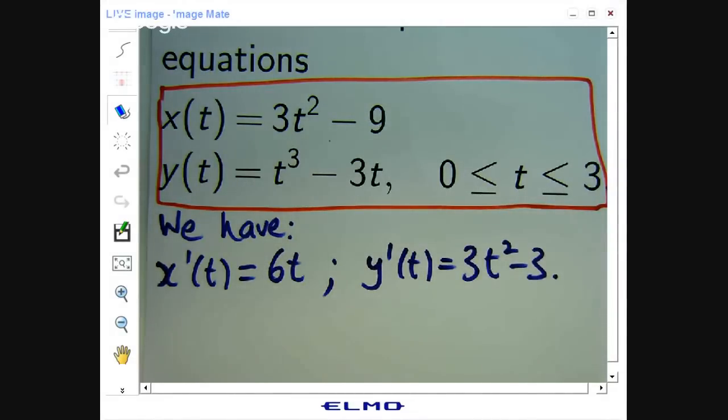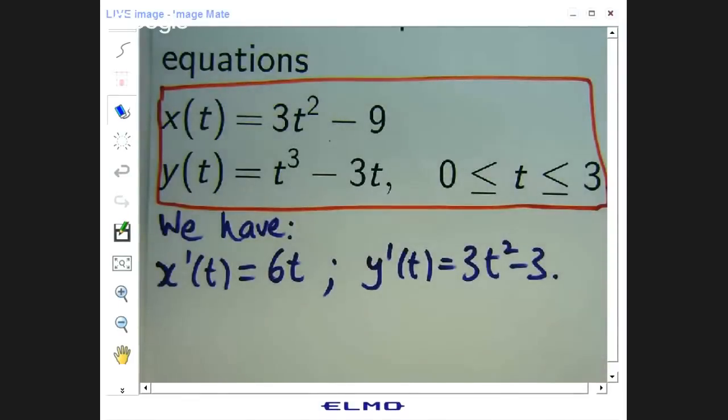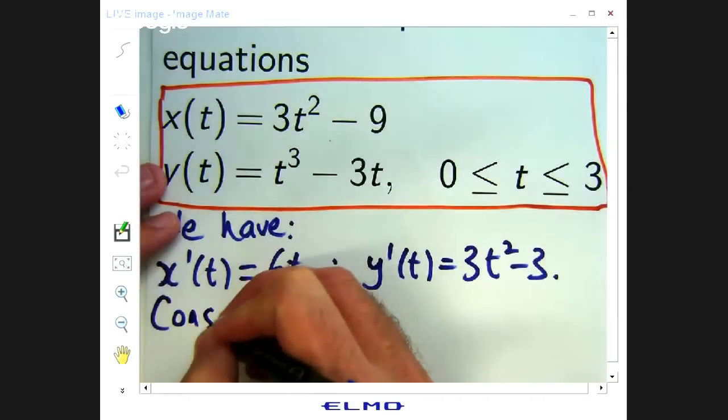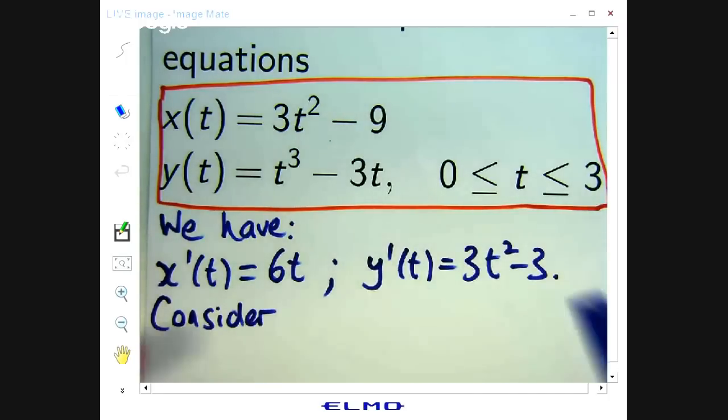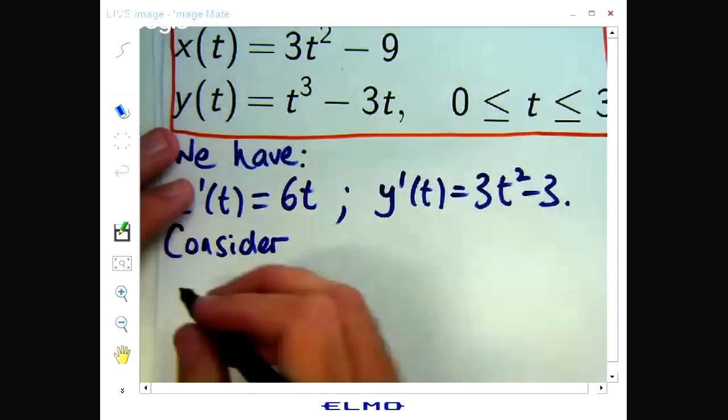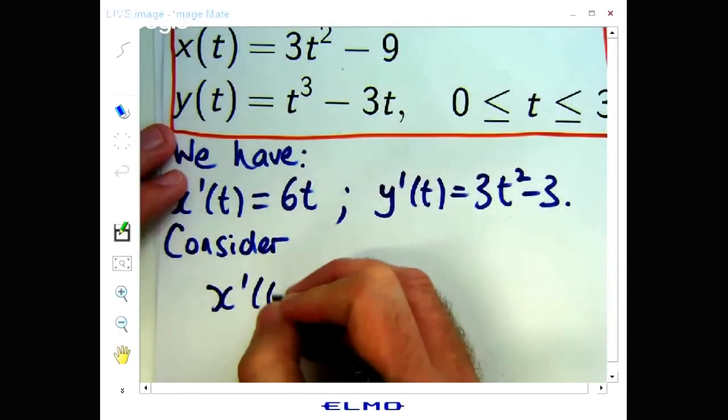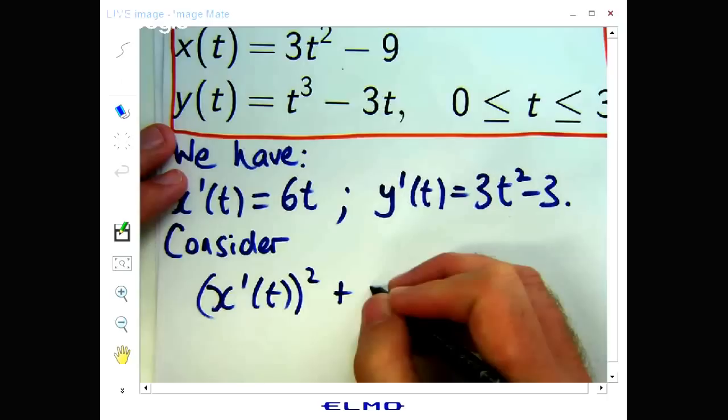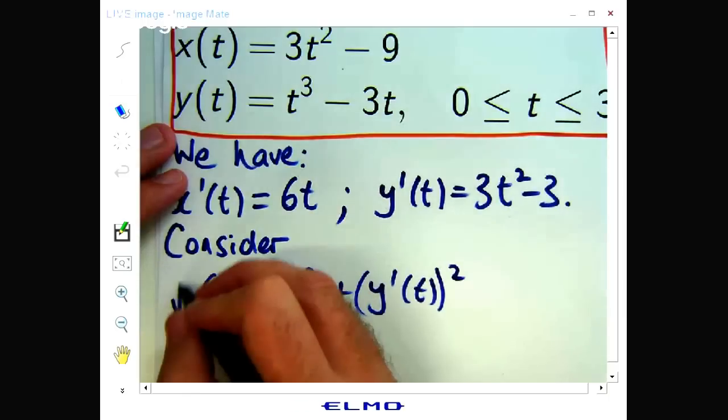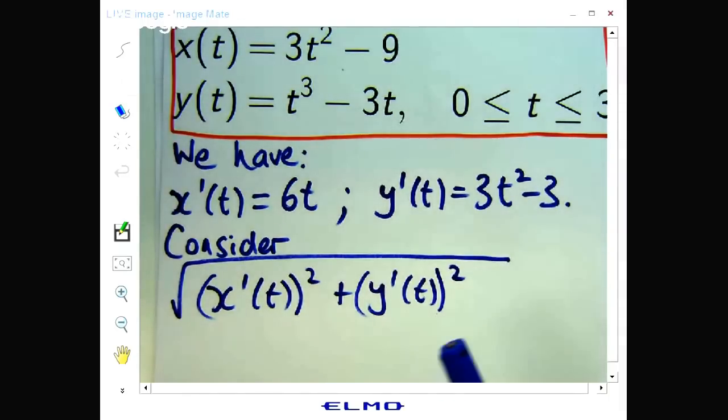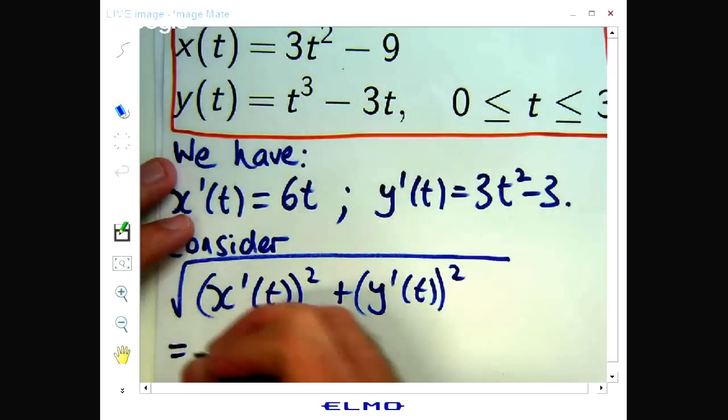So now what? Well, what we're going to do is we're going to square those derivatives and sum them and take the square root. Now that seems very odd and I'll give you the geometric interpretation of why this helps with the arc length at the end. So let's consider the sum of the squares of these all square rooted. So it's not clear why I'm doing this first, but it's just from a simplification point of view. You'll see when we get to the end why this is important.